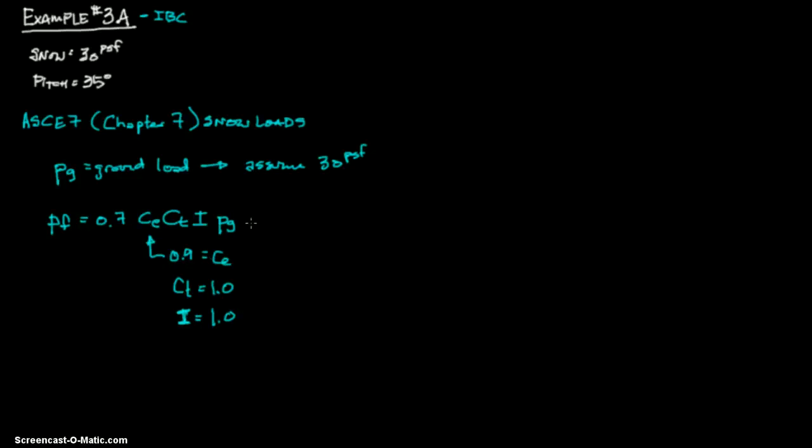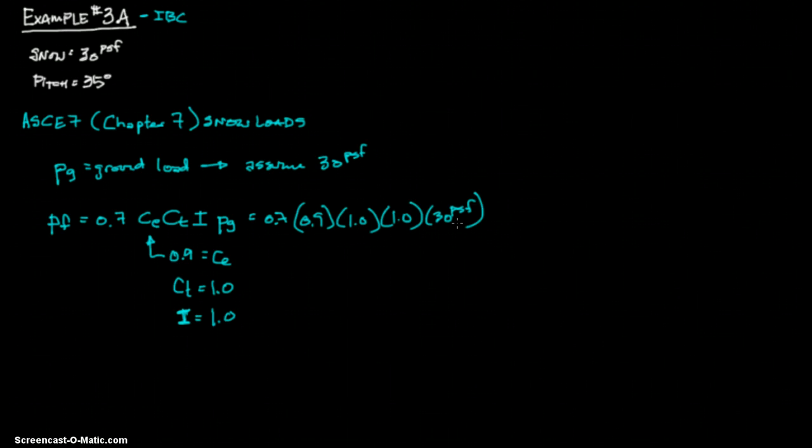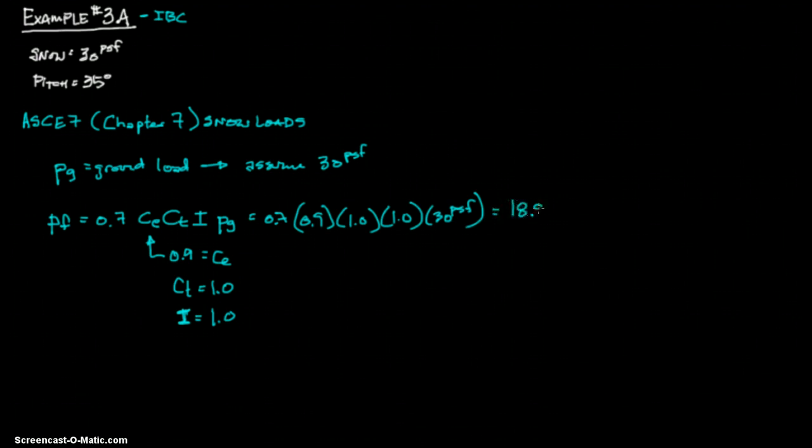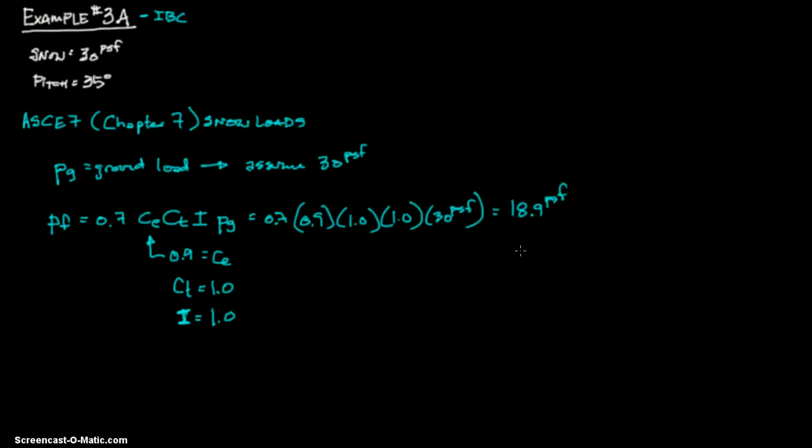Let's go ahead and solve for this. I think we made all of our assumptions. 0.9, our CT is 1, our I is 1, and our PG is 30. So as you can see, it's just 0.7 times 0.9 times 30. I would say for about 90, maybe 70% of your buildings, this is probably going to be true: the 0.7, 0.9 times your ground load. That's a major assumption. And we get 18.9 PSF. So that's our reduction right away. We're already down from 30.